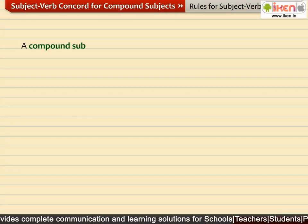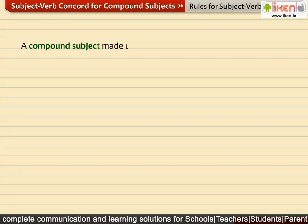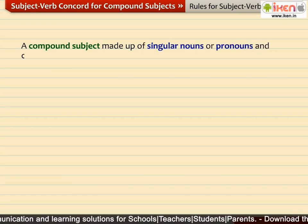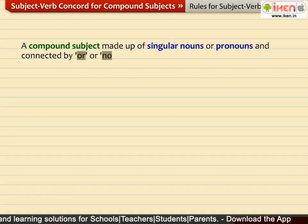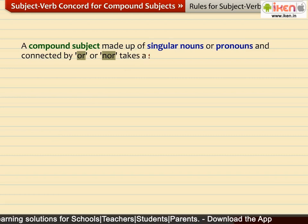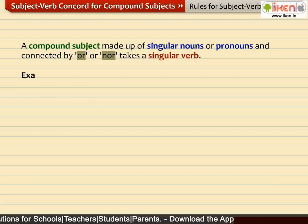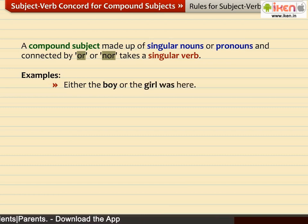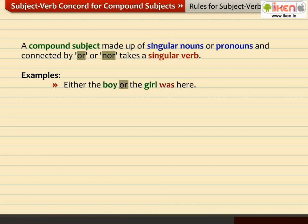A compound subject made up of singular nouns or pronouns and connected by OR or NOR takes a singular verb. For example: 'Either the boy or the girl was here.' The singular nouns BOY and GIRL are connected by OR, and they take the singular verb WAS.